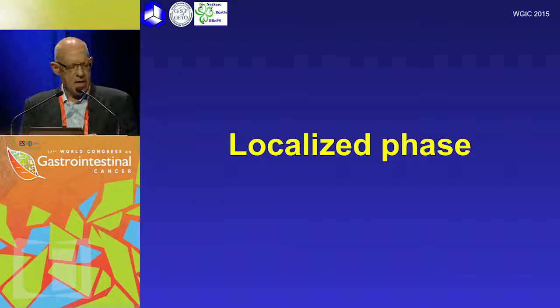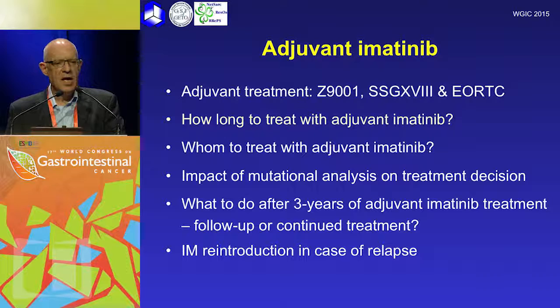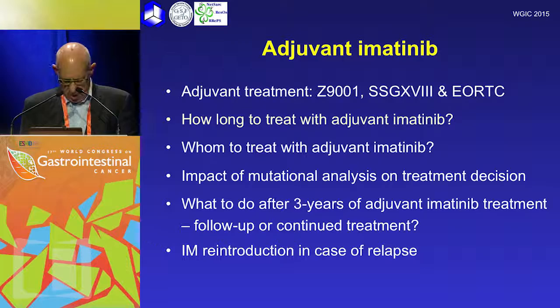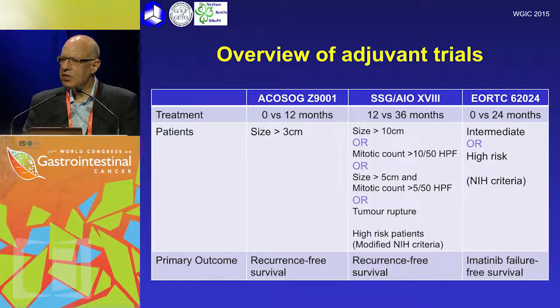In terms of localised GIST, there are lots of questions: What sort of treatments do we give? How long do we treat patients for? Who do we treat and who don't we treat? What's the impact of various mutations on treatment? What do we do after the adjuvant therapy stops? And what do we do when people relapse?